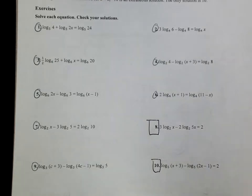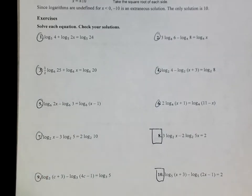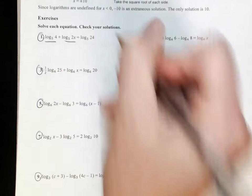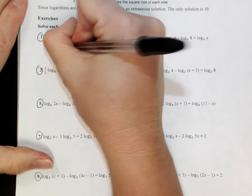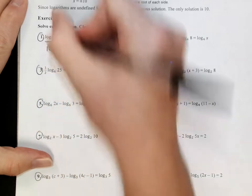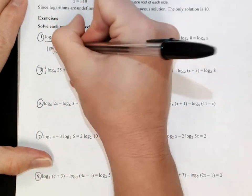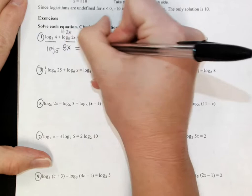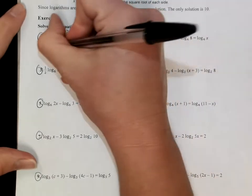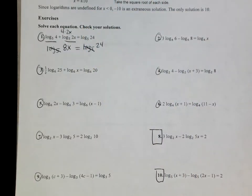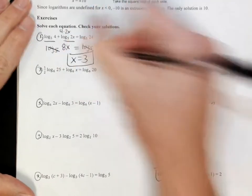You're still going to first use your properties of logs to put everything together. So I'm going to start here in question number one. If I have two logs that are added, I can put those together by multiplying my insides. So this is the same thing as log₅ of 4 times 2x. I'm going to go ahead and shortcut that a little and say that's 8x equals log₅ of 24. The nice thing about these is after you get them together, they are super easy to solve. You mark out the log part, you solve what's left. 24 divided by 8, x equals 3, and you're done.